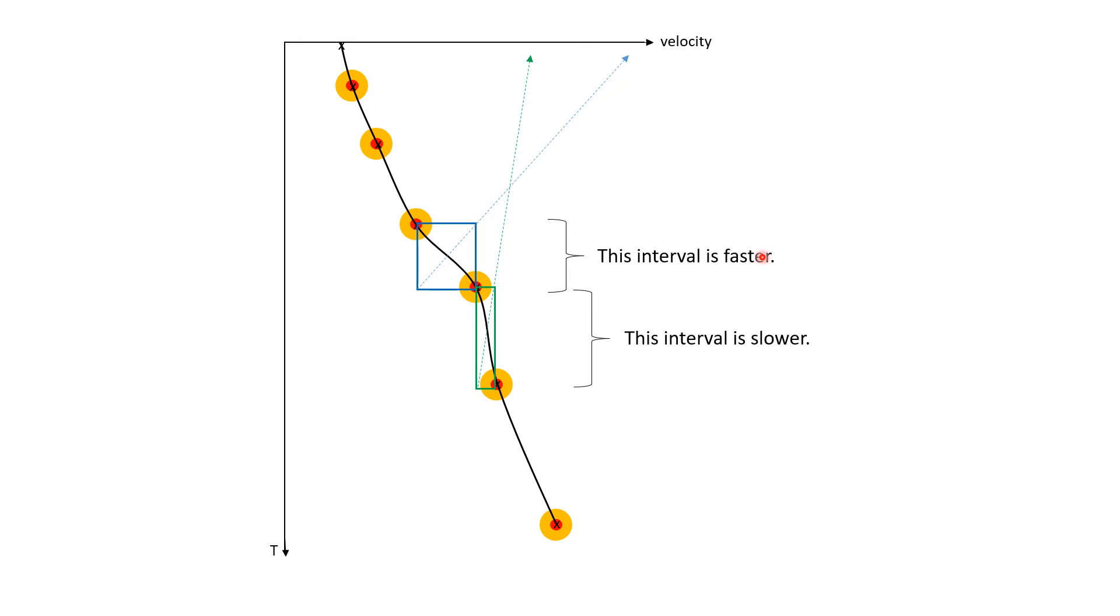So, this interval here is faster, this interval here is slower. It's a pretty good trick, just to give you a ballpark idea of which intervals are faster and which intervals are slower.